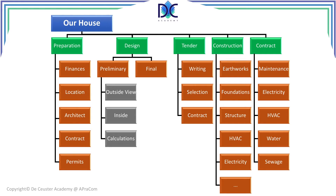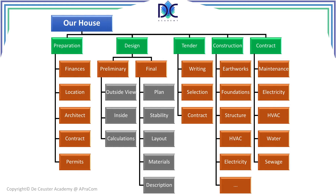Looking at the preliminary design, we consider the outside view — very important for permits — how it will look inside, some cost calculations, and preliminary stability calculations. Once approved, the final design includes the plans, stability, layout, materials, and descriptions. All these things can be part of building a house project. When you want to build your own house, this is a good way to think about how you will tackle the project.